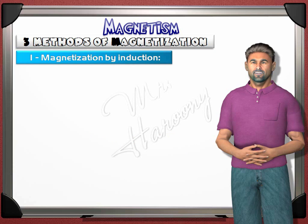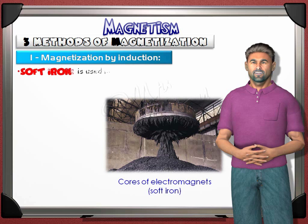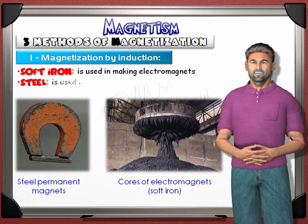Because of these properties, soft iron is used in making electromagnets, while steel is used in making permanent magnets.